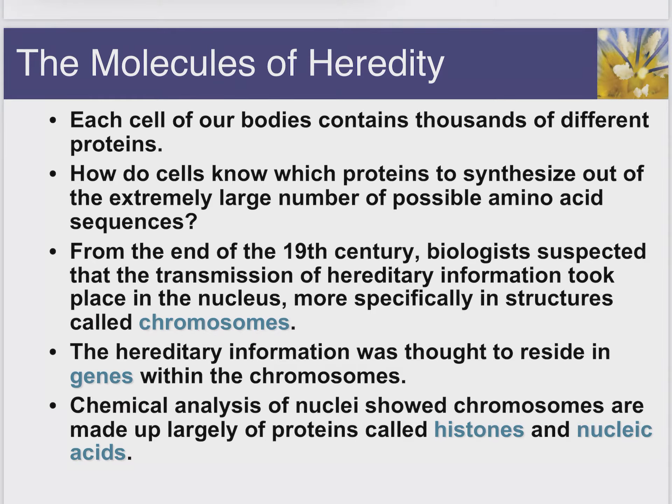It was pondered in the early days of chemistry and biological study where all the proteins came from. They thought that proteins were encoded, and they knew that it must have been something that could be passed down. Looking in the cell with microscopes, they were able to figure out where this was happening, and the main structure that looked like the suspect was the chromosomes. The chromosomes are a secondary or even tertiary structure of DNA.